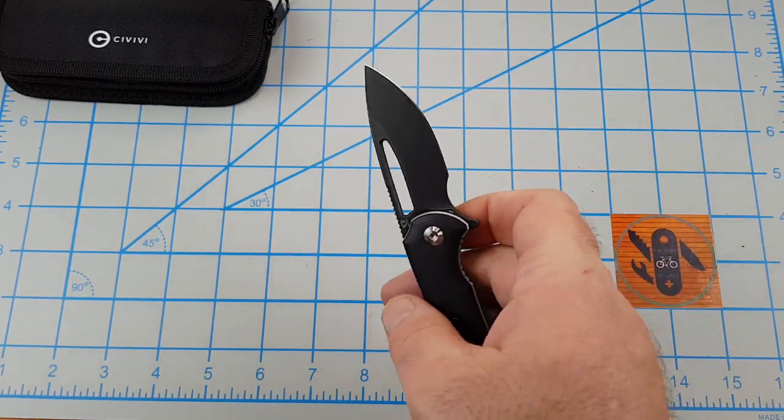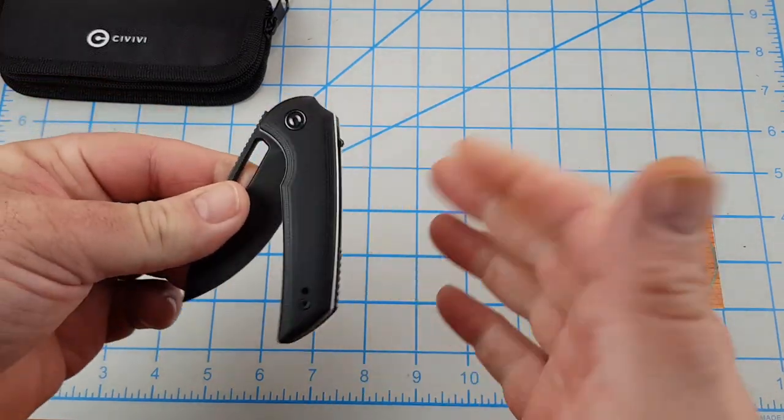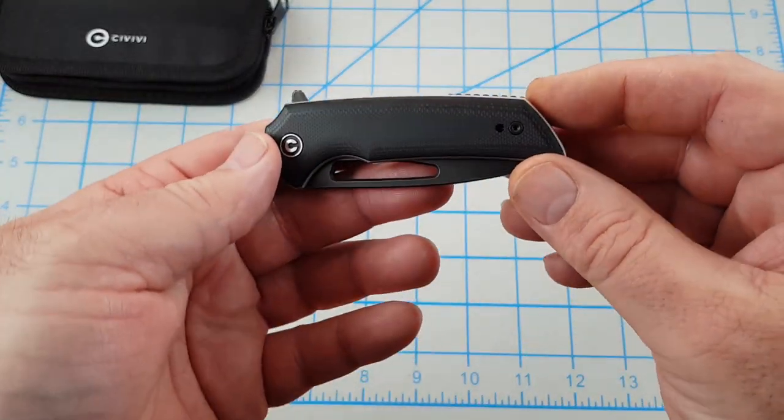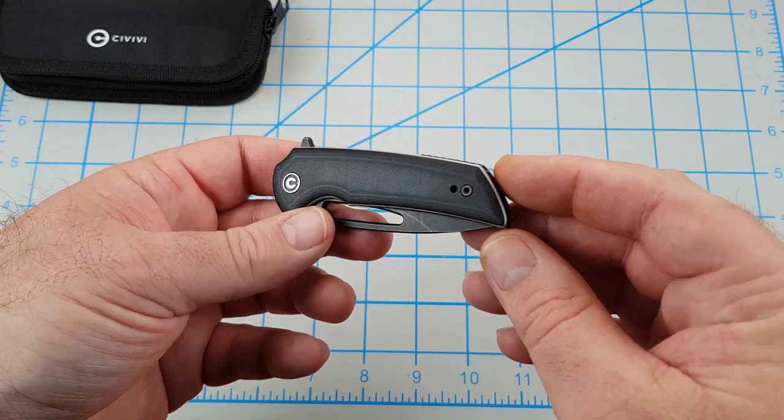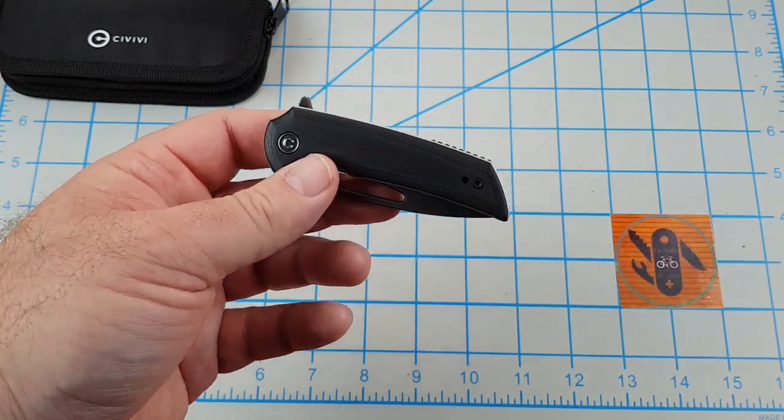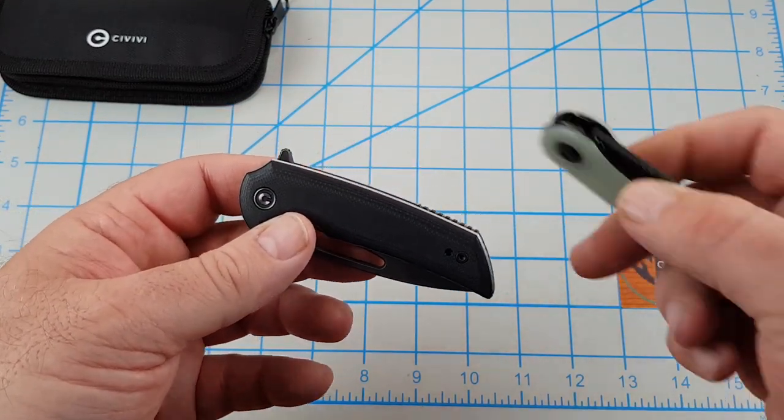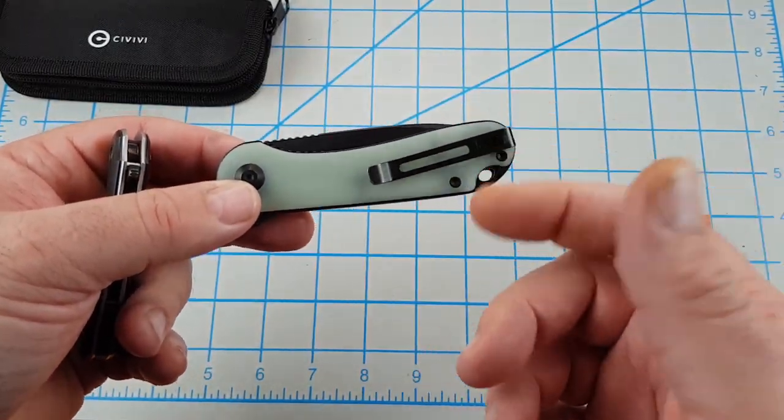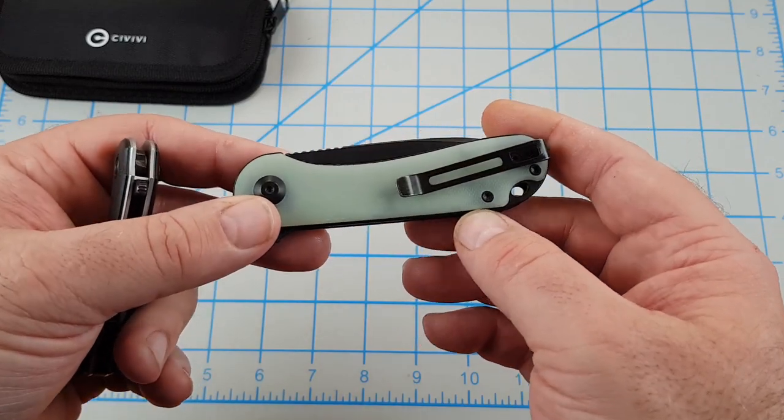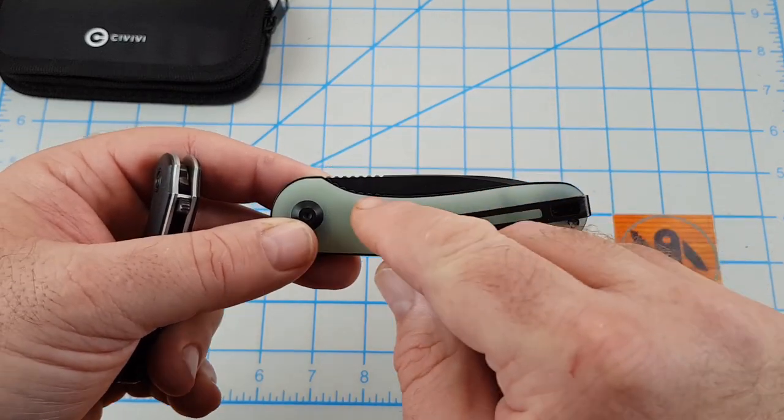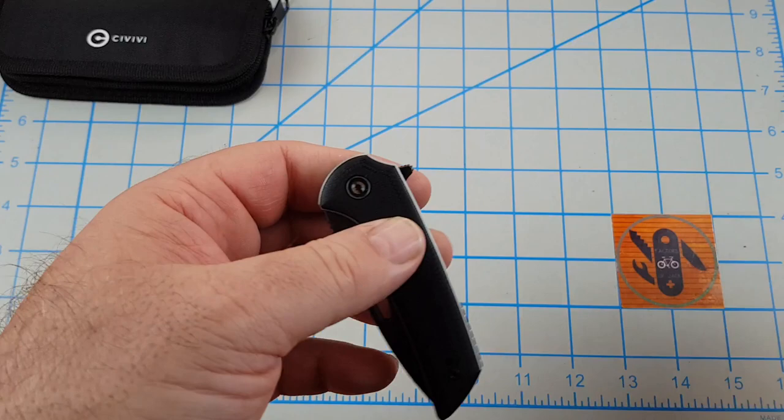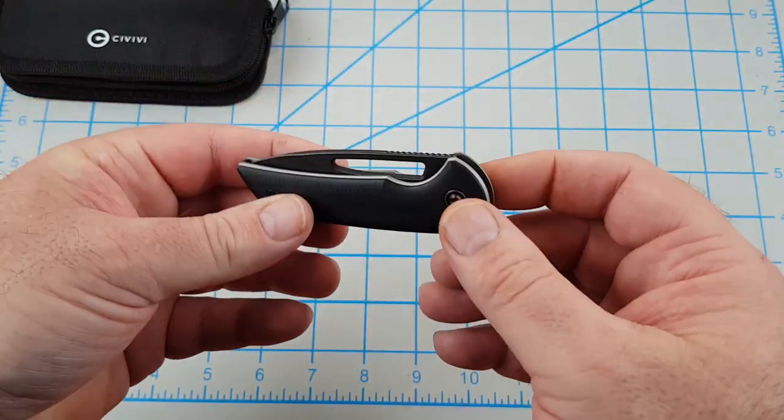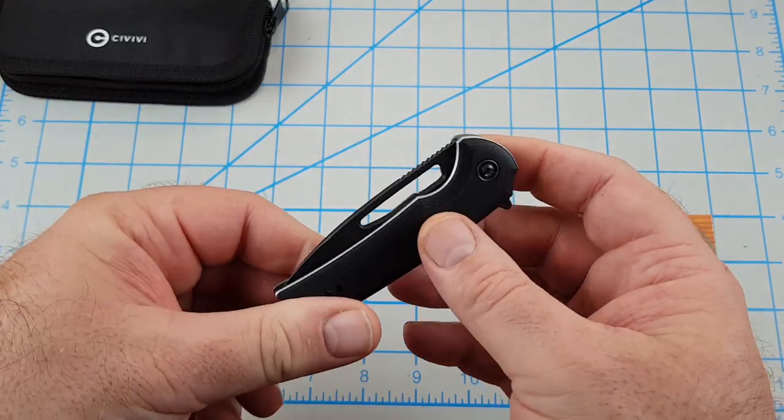This isn't bad, it's definitely no deal breaker for me. Up here I don't even feel it, so that's excellent. G10 scales and they're shadow boxed by the liners, like the Civivi Elementum. This is the S35VN version of the Elementum, but you can see the liners around the outside of the scale. I like that look. Some people don't like that look, I do.